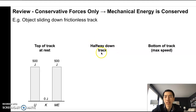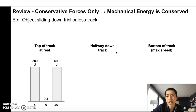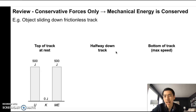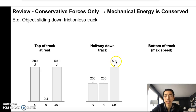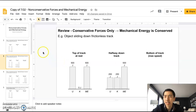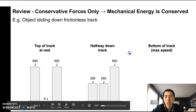As it slides down the track, we'll analyze halfway down. Some of that gravitational potential energy has turned into kinetic energy, because now it's moving and getting faster, gaining more and more kinetic energy. So perhaps it's 250 and 250, adding up to 500 — that might be exactly halfway down the track. It could be 300 and 200, or 400 and 100, depending on where along the track. But the main idea is that total mechanical energy has to stay the same — 500 at any point along this journey.